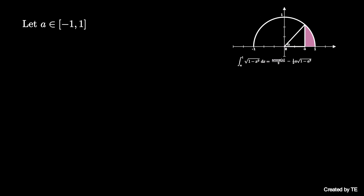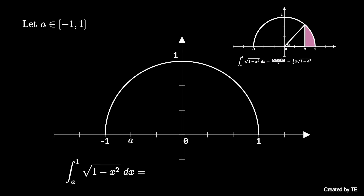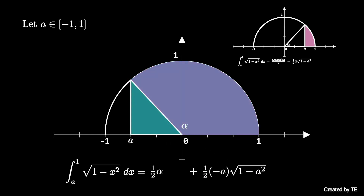But this diagram only works if a is positive. If a is negative, the region that we want looks a little something like this. Luckily, this region is now the union of a sector and a right triangle. Again, if this sector has angle alpha, then the area is 1 half alpha. This time, we add the area of the triangle, which now has base negative a and height square root of 1 minus a squared. As before, alpha is the arc cosine of a, and we can think of adding the negative as subtracting. This yields the same formula as before.